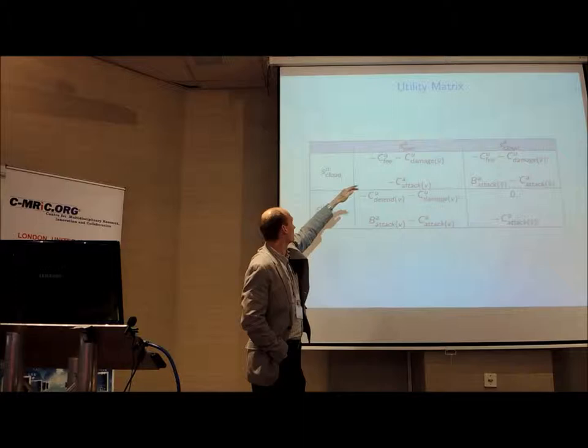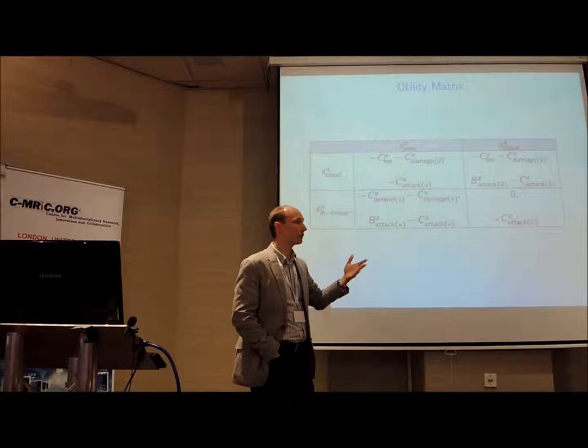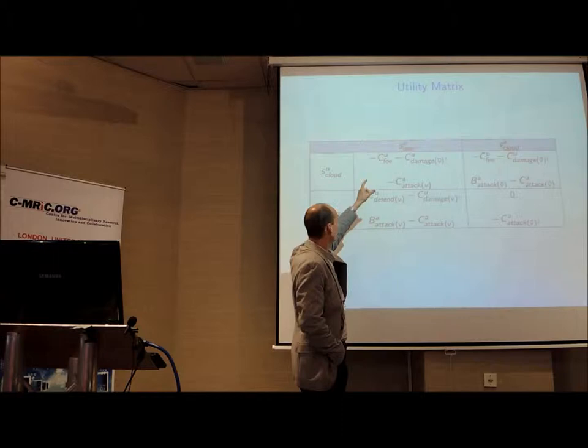And this row is where the attacker, sorry, the user outsources the asset to the cloud. So you get this matrix and in each particular scenario we then come out with our cost-benefit. So this is benefit minus cost, for example here. Benefit of an attack minus cost.